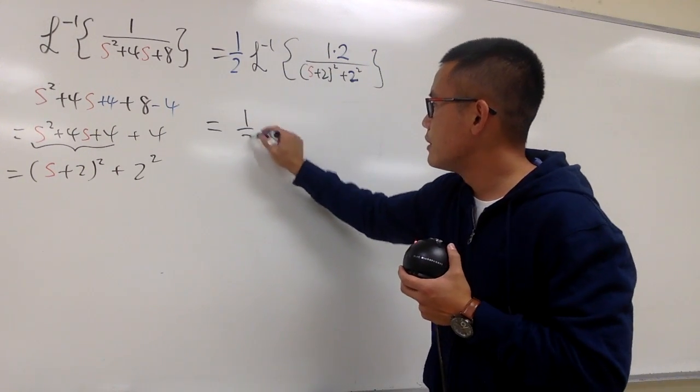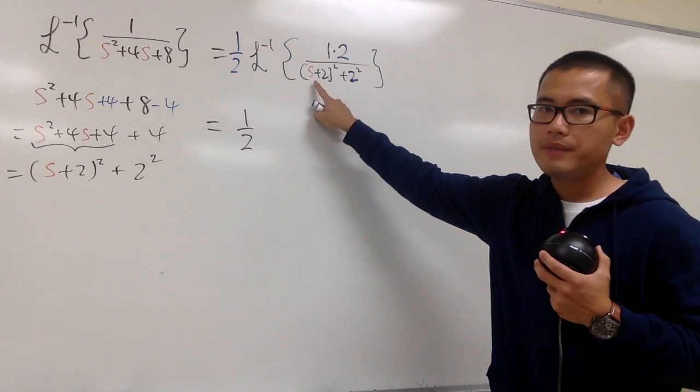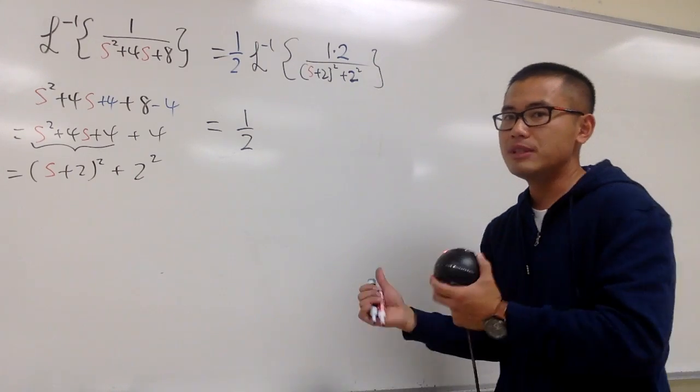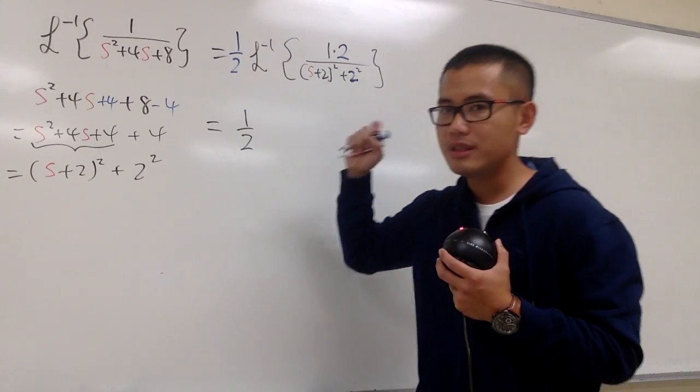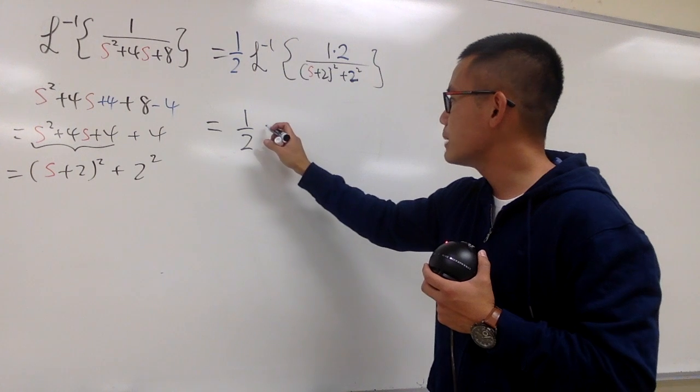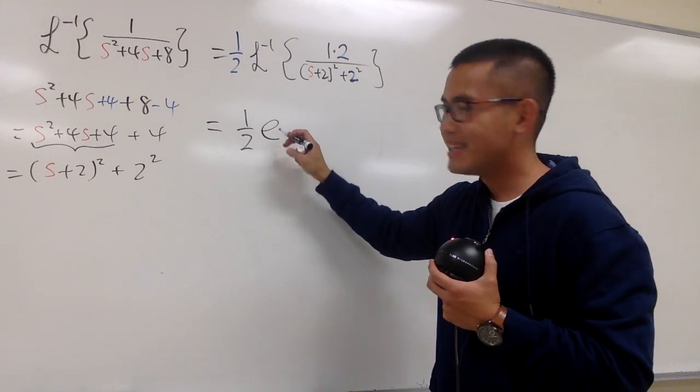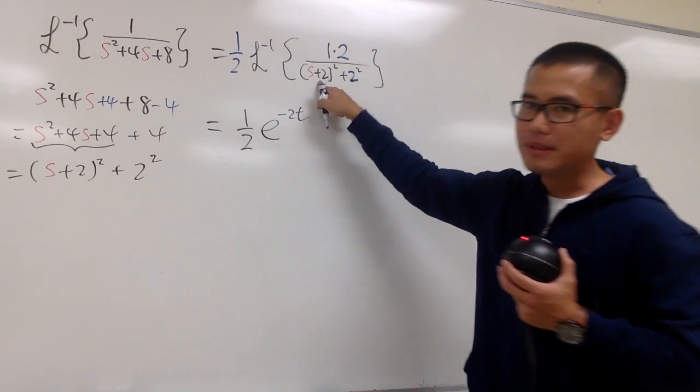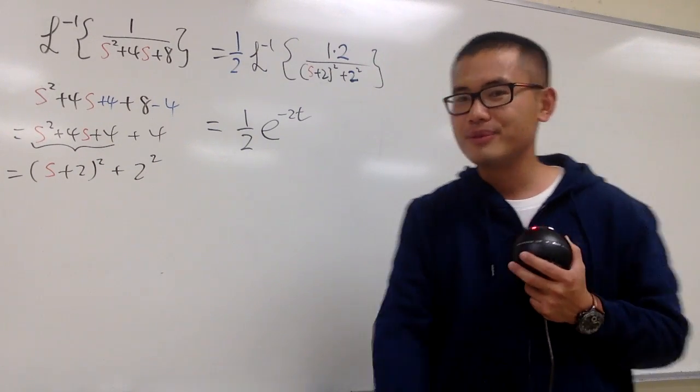Let's see what we are getting. Let's put down the 1 half. As you can see, this is s plus 2. That means this right here has been shifted. That means when we go back to the t world, we have to multiply by e to the negative 2t. Because this is the same as a minus negative 2.